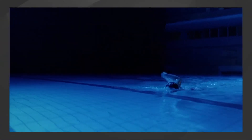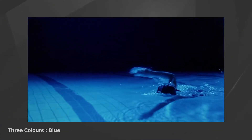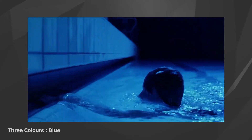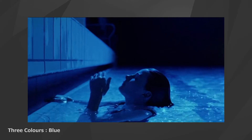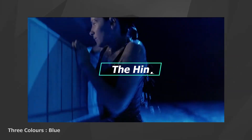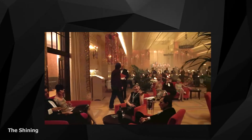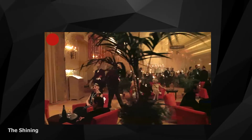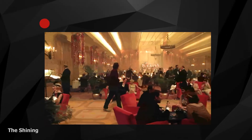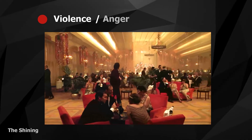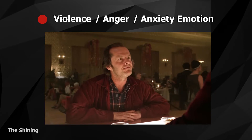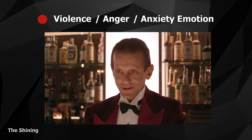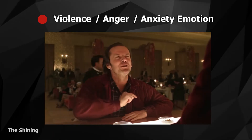In order to push the plot, sometimes the director will choose a certain color to run through the whole story or a certain section. In this case, the color works as a hint. For example, in the movie The Shining, we can see the red color throughout the whole story. Red implies violence, anger, and other anxiety-inducing emotions. It also helps reveal the theme of the film and implies how the plot is going to develop.